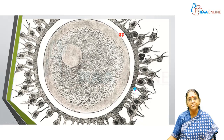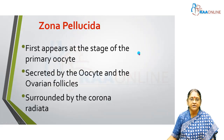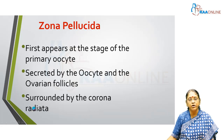Now have a look at this picture. Here is the egg proper — the human egg or the human ovum — and here is that white-looking layer. This white layer is the zona pellucida, and these are the cells of the corona radiata, which surround the zona pellucida. The zona pellucida first makes its appearance at the stage of the primary oocyte. It is secreted by the oocyte proper and by the cells of the ovarian follicle. The zona pellucida is surrounded by the corona radiata.